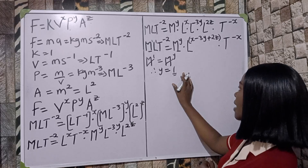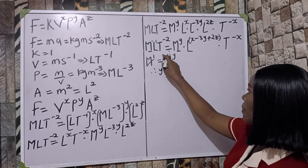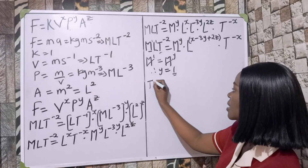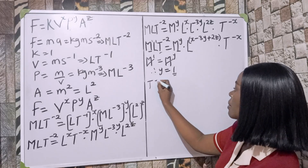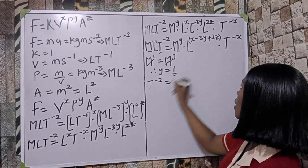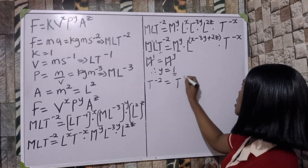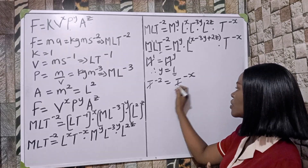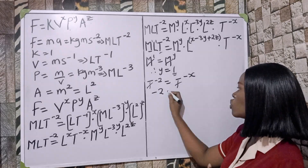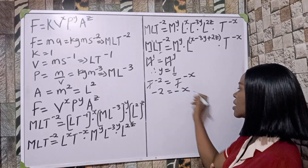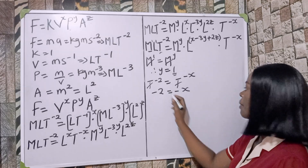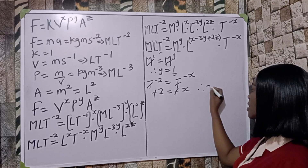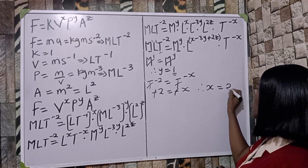Next, equating the powers of T: T⁻² equals T^(−x). Cancelling T, we get minus two equals minus x, so x equals two.